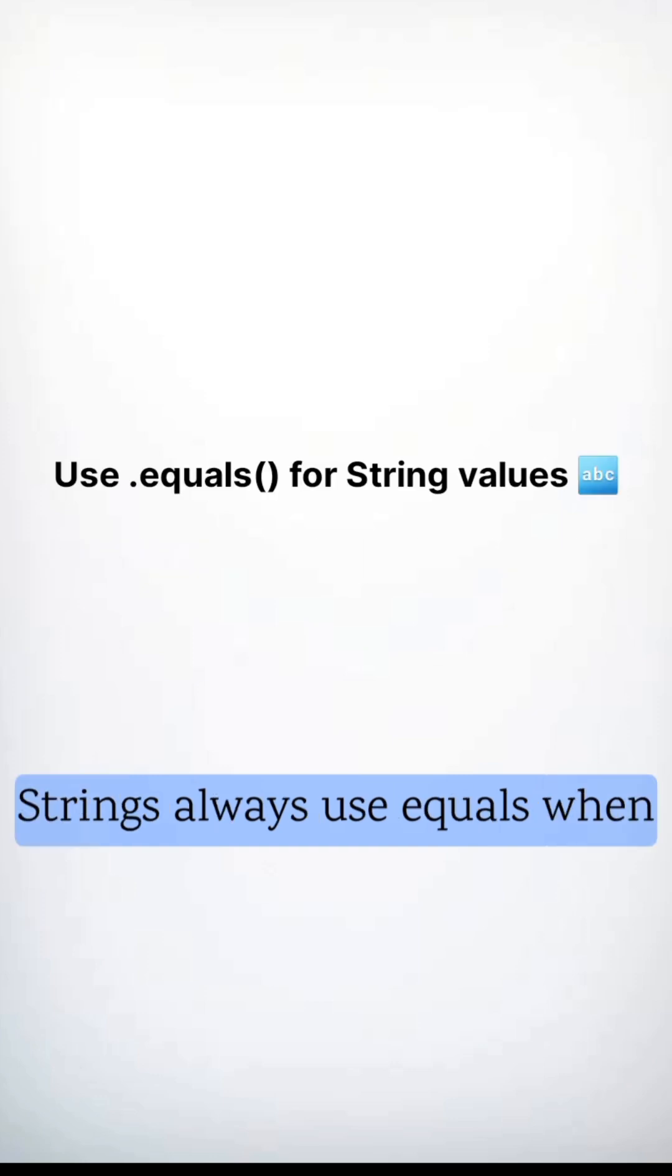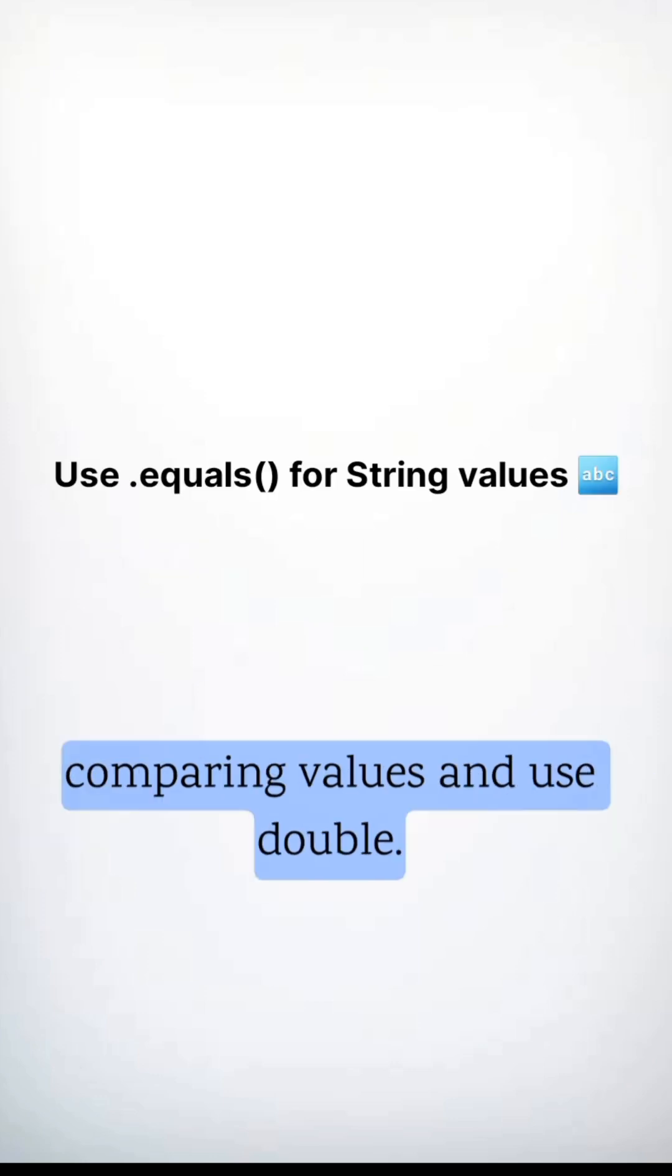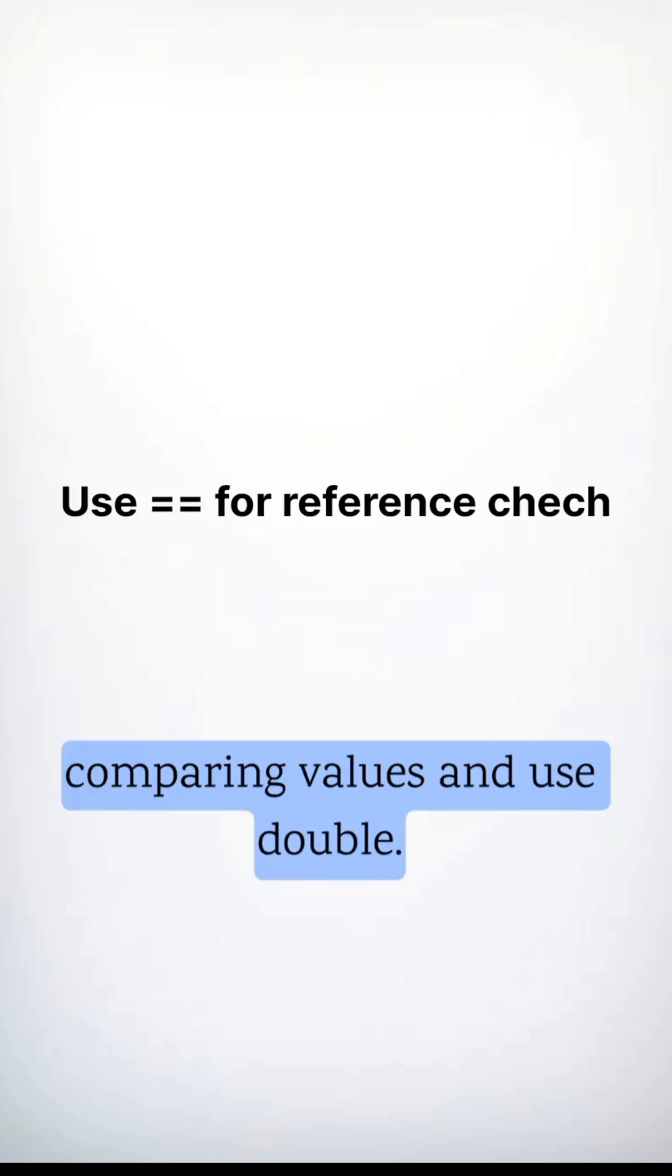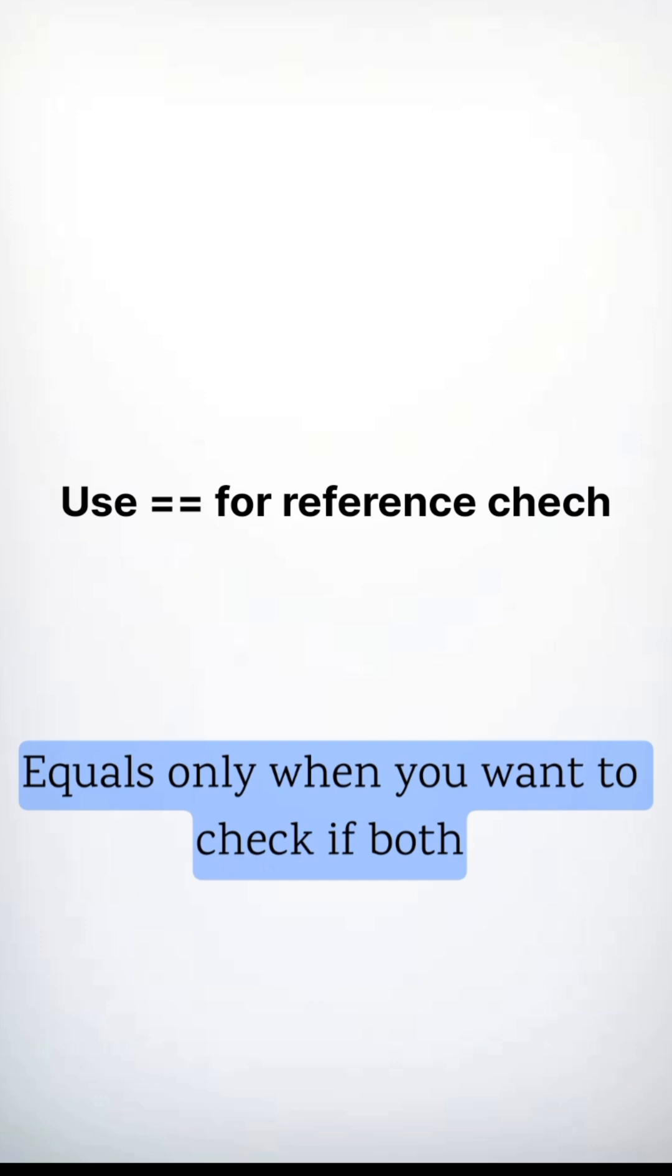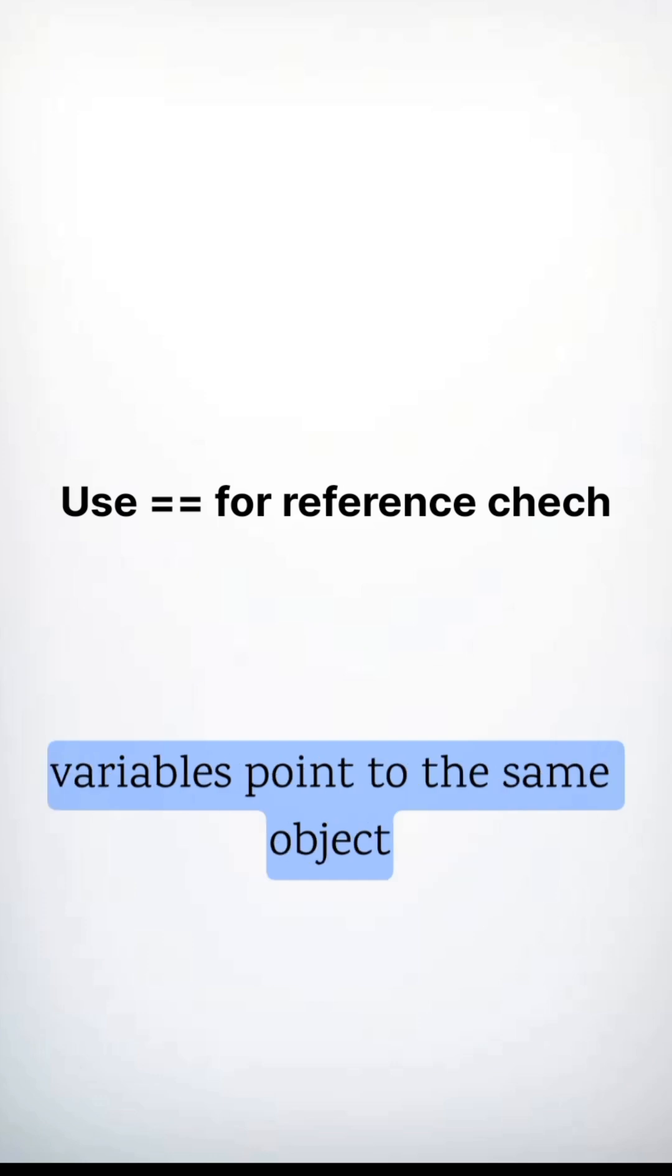Quick tip! For strings, always use dot equals when comparing values. And use double equals only when you want to check if both variables point to the same object.